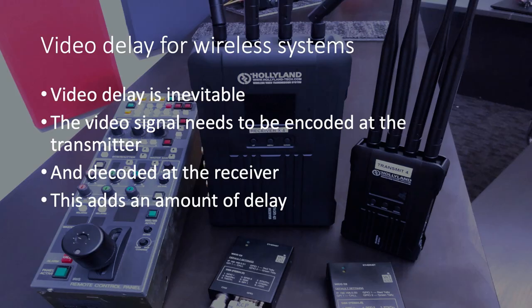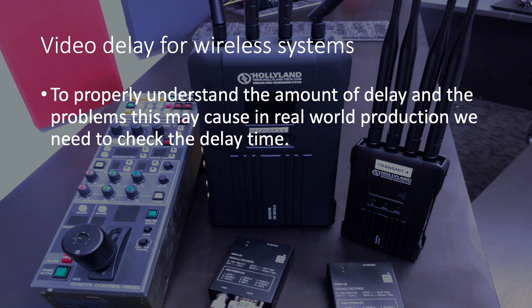So first of all let me explain a few things. Video delay in an RF system is inevitable. The video signal needs to be encoded at the transmitter and decoded at the receiver. This will add an amount of delay or latency. To properly understand the amount of delay and the problems this may cause in real world production we need to check the delay time.